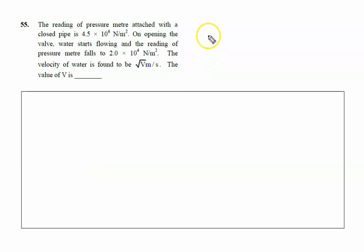The reading of the pressure meter attached with a closed pipe. This is the closed pipe and the reading is given by pressure P₁ = 4.5 × 10⁴ N/m² in SI units.